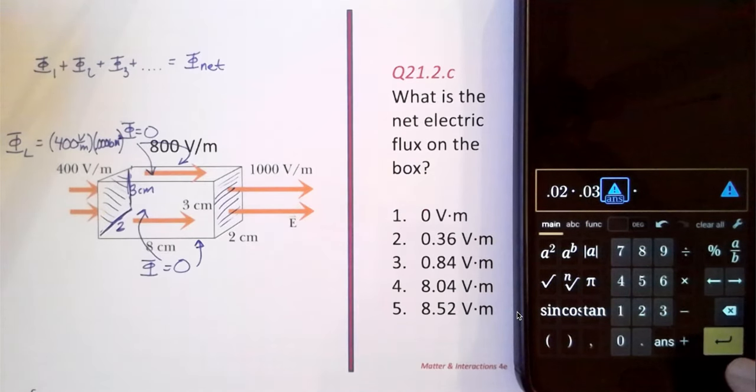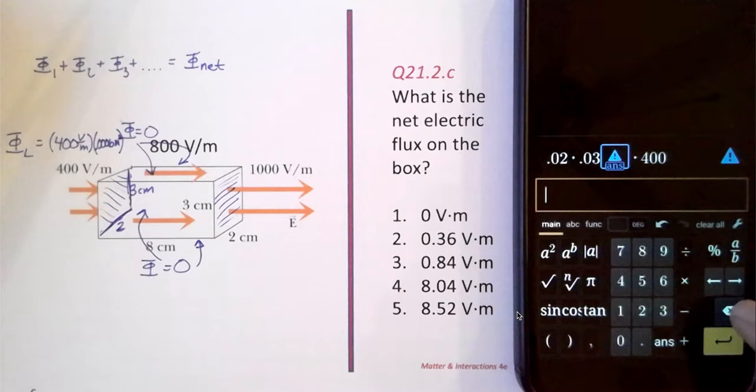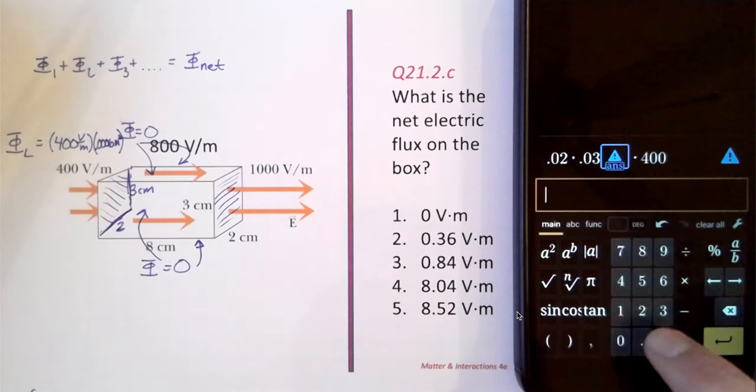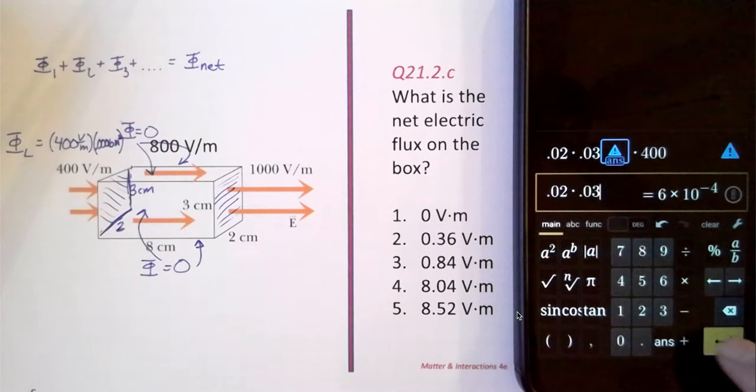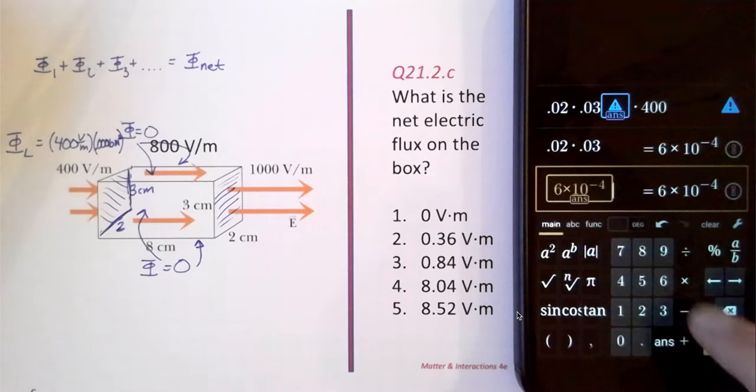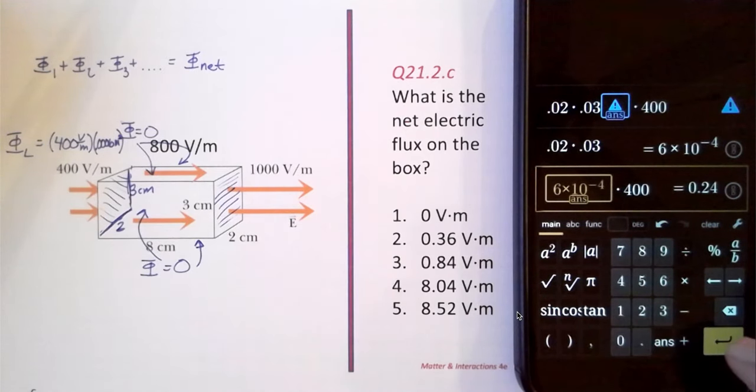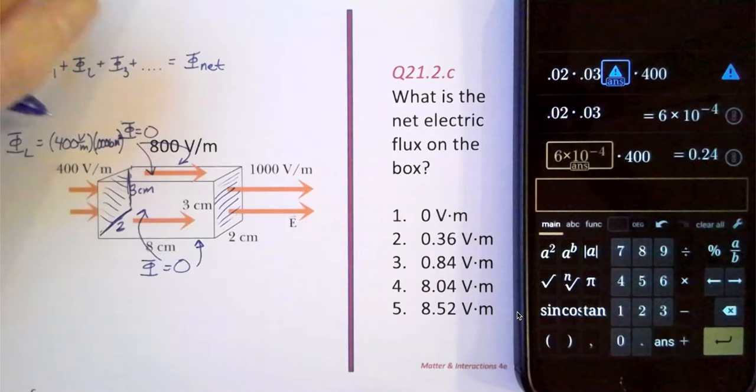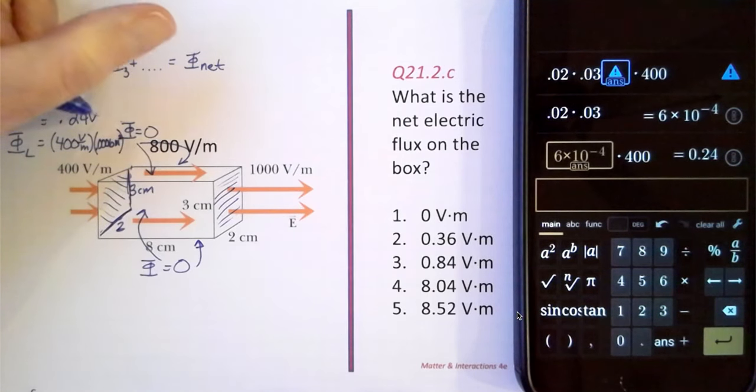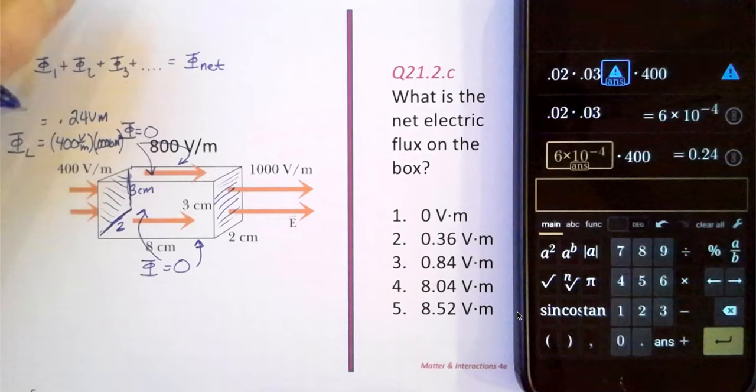So that area times 400, made a mistake there, 0.02 times 0.03, there's my answer. And then that number times 400. So that gets us 0.24 volt meters for our left side flux.